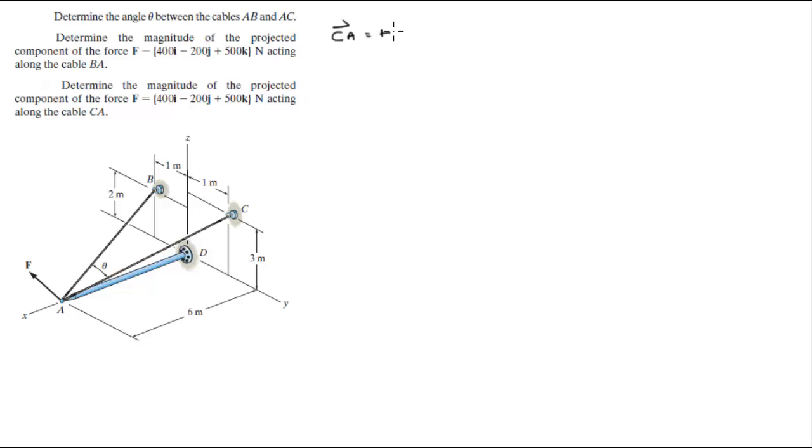Therefore vector CA is going to be positive 6I minus 1J minus 3K. And the magnitude of CA is the same as the magnitude of AC which is 6.8 which we already found before.